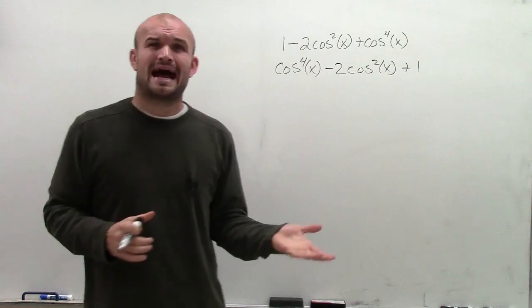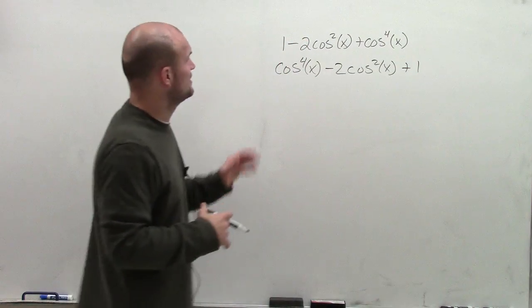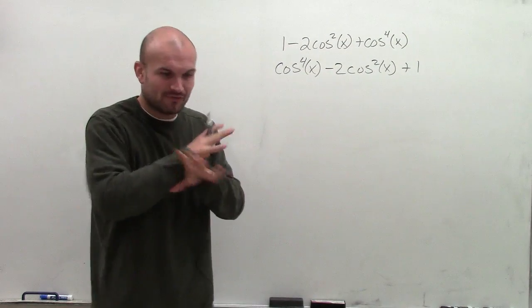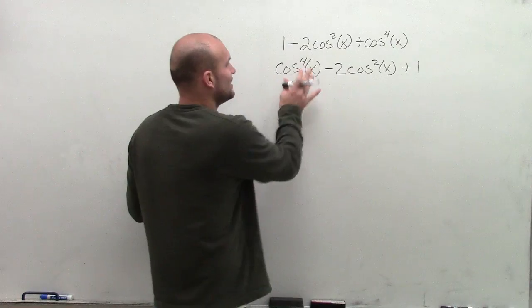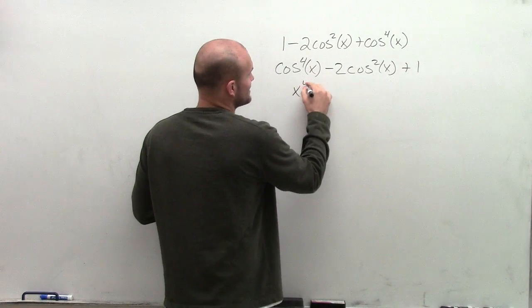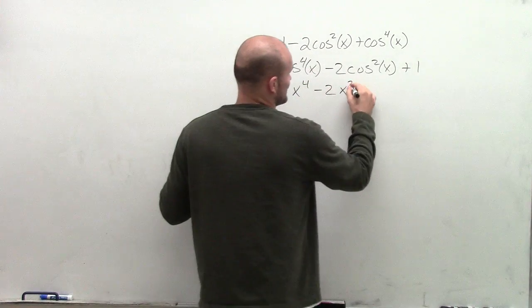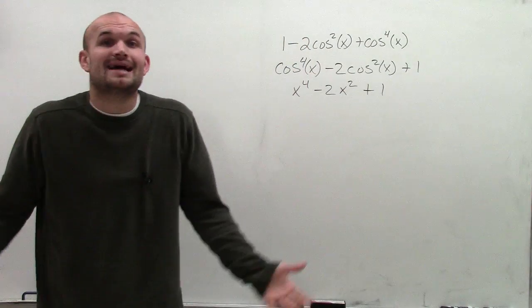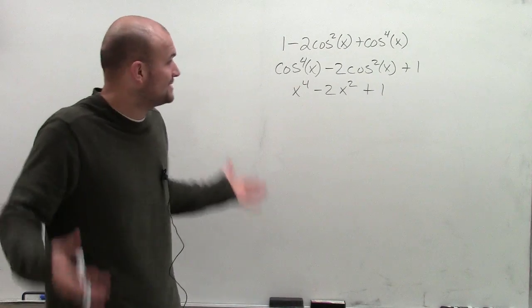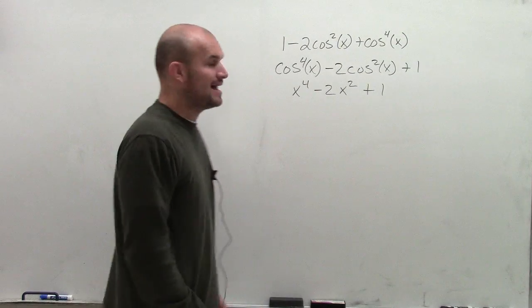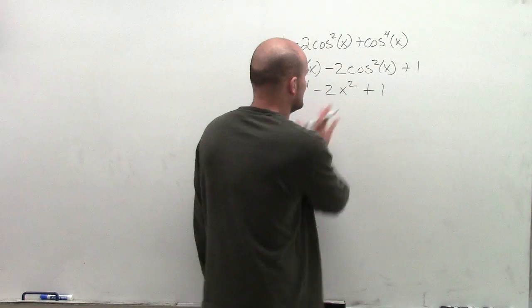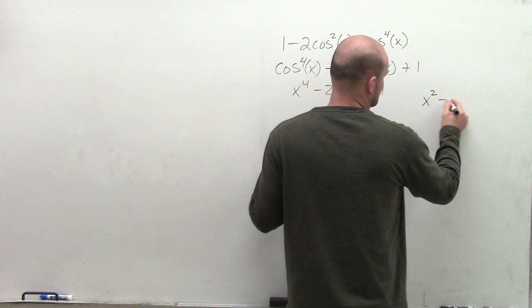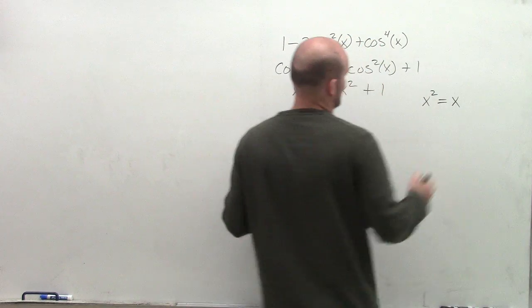Now, you might still be saying, I still don't know how to factor this. So what I like to do is rewrite this without my cosine. Let's forget about our trig for a second, and let's just pretend this is x to the fourth minus 2x squared plus 1. If you're still having trouble factoring, let's replace this and have x squared equal to x.